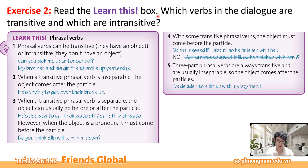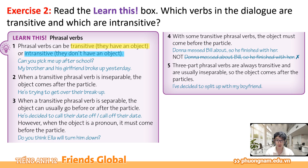Exercise number 2. Read the learn this box. Which verbs in the dialogue are transitive and which are intransitive? Các bạn sẽ nhìn qua khung Learn This để phân biệt thế nào là transitive (ngoại động từ) và thế nào là intransitive (nội động từ). Learn This — phrasal verbs number 1: phrasal verbs can be transitive (they have an object) or intransitive (they don't have an object). Khái niệm ngoại động từ và nội động từ phụ thuộc vào việc đằng sau cụm động từ có tân ngữ hay không.